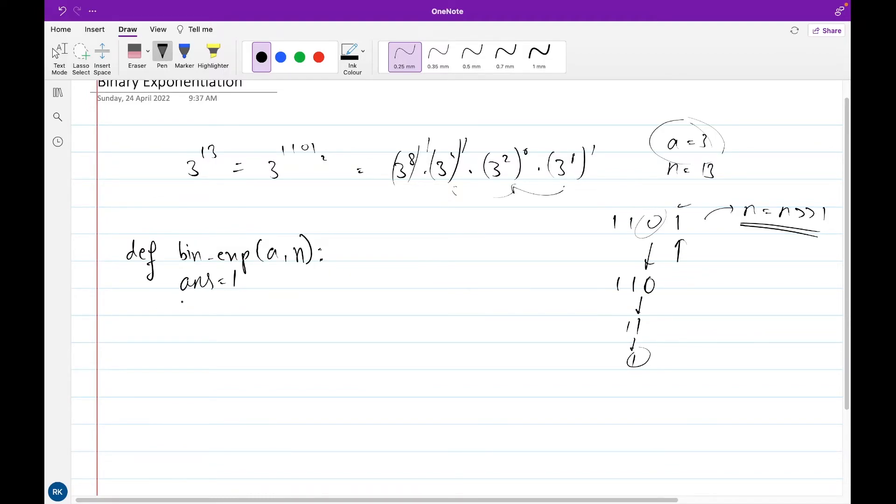So I will do while n greater than 0. Until n is greater than 0, if n and 1, that means if the last bit of n is 1, then I will multiply a to our answer. So answer times equals a.